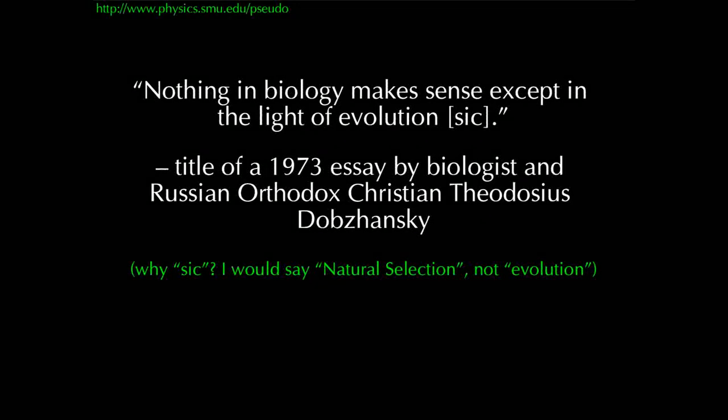Finally, natural selection would predict that seemingly very different species may have simply branched long ago but should share some common inheritance information. Once we understood DNA and could match genes across species, we learned that humans and chimpanzees have 99% of their DNA in common and shared a common ancestor about 5 million years ago. I want to close this section with a favorite quote — by Theodosius Dobzhansky, a Russian Orthodox Christian and biologist, from 1973: 'Nothing in biology makes sense except in the light of evolution.' I would say natural selection rather than evolution, since evolution is the observed biological fact and natural selection is the explanation of that fact.